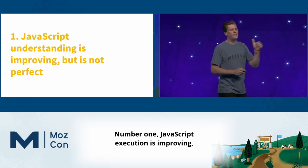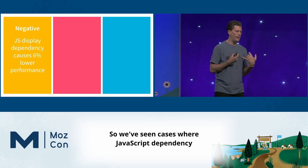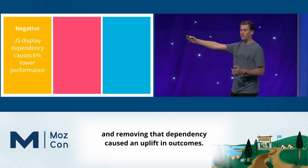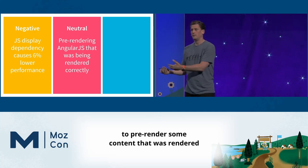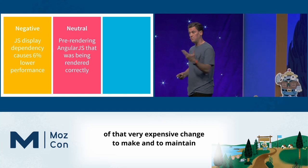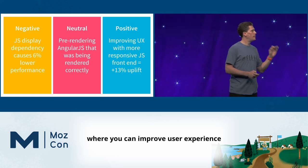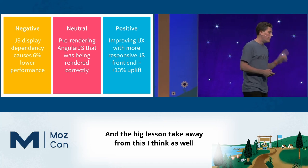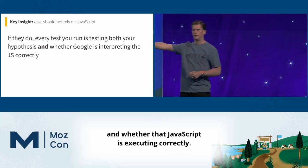Lesson one: JavaScript execution is improving, but Google's execution of JavaScript is not perfect. We've seen all different outcomes in different tests. We've seen cases where JavaScript dependency was a significant drag on organic search performance, and removing that dependency caused an uplift. We've also seen cases where a ton of investment into pre-rendering content that was only rendered in client-side JavaScript showed no detectable benefit, because that JavaScript was actually being executed fine already. And we've even seen it be positive where improving user experience drives better performance. The big lesson: you can't run SEO tests in JavaScript, because every test would be testing both your SEO hypothesis and whether the JavaScript is executing correctly.